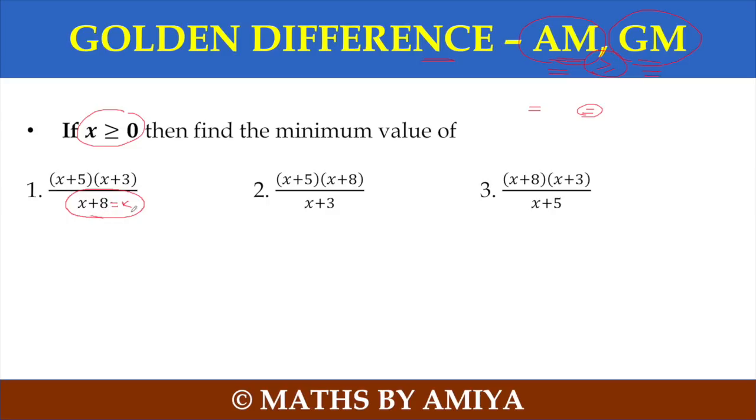Assume x plus 8 equals k. So the first term will be k minus 3. If you know k minus 3, this is k minus 3, and this will be k minus 5 divided by k. So this one is not an AM-GM case. Neither here nor here, because we get k minus 3 terms, k minus 5 terms.